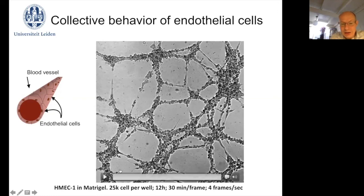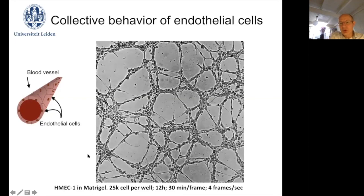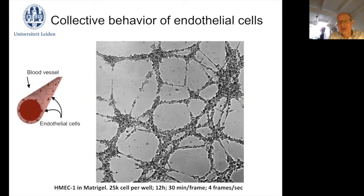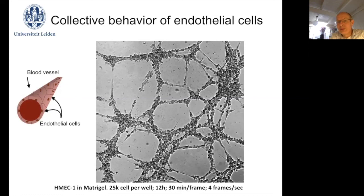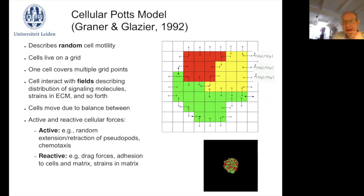These are human microvascular endothelial cells, an immortalized cell line, plated out in Matrigel, which mimics the natural environment the cells are in. They will organize into these kinds of network-like patterns. When I started my postdoc in Bloomington, Indiana with James Glazier, I became interested in what rules cells need to follow in order to form these kinds of endothelial network-like patterns.